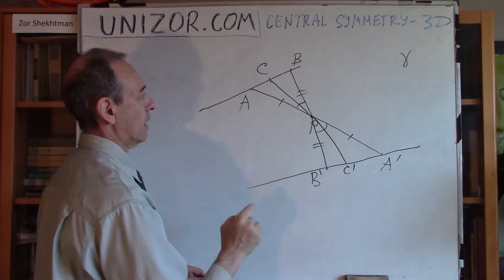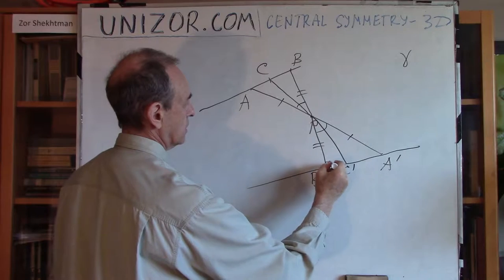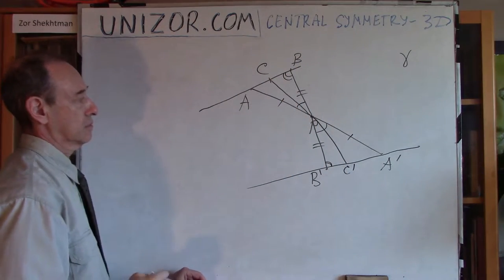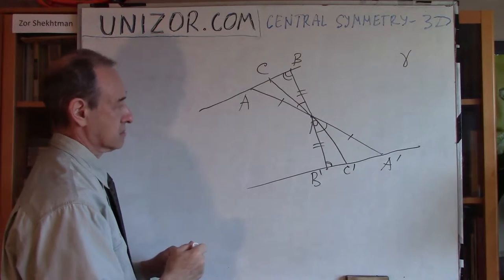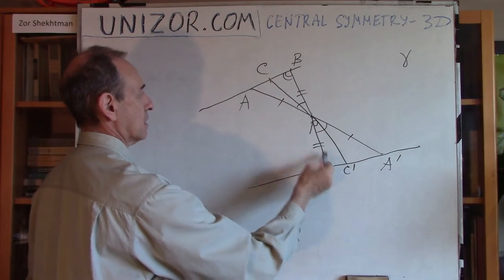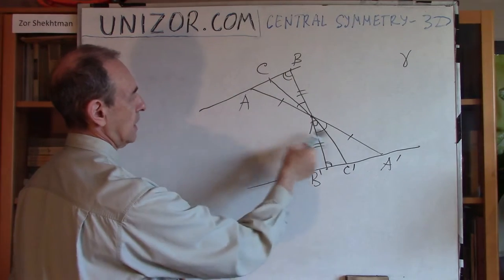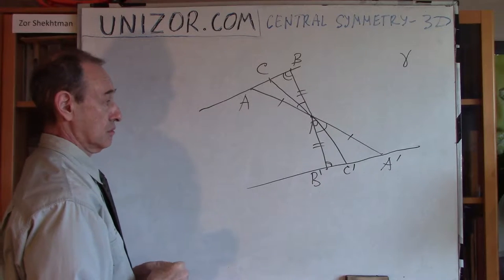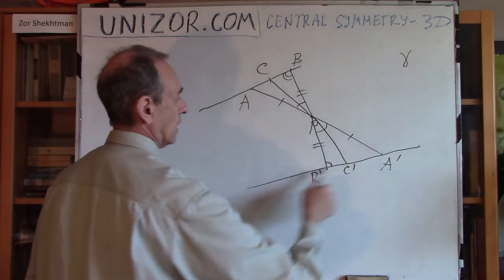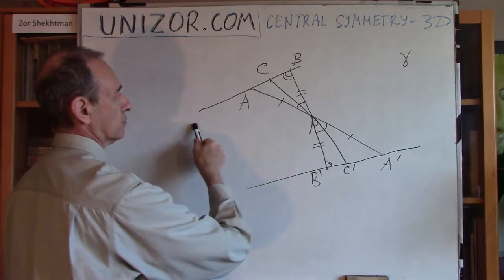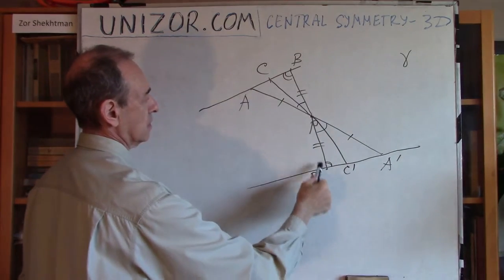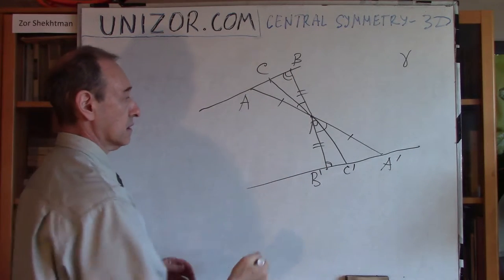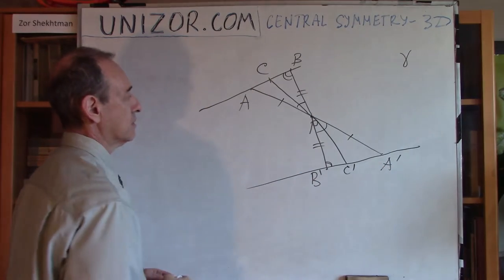From the congruence of triangles ABP and A prime P B prime, these two angles at A and A prime are also equal to each other, because angles opposite to equal sides are equal. This means that line AB is parallel to line A prime B prime, because we have two lines, a transversal through P, and these are alternate interior angles. So line A prime B prime is parallel to AB.